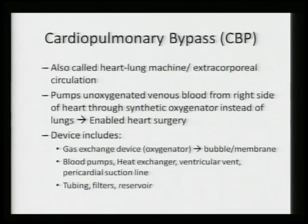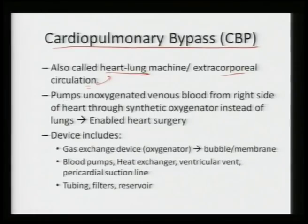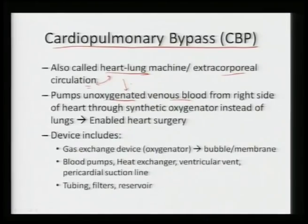A second application is cardiopulmonary bypass, also called the heart-lung machine or extra-corporeal circulation. This is required to exchange oxygen when the heart has been disabled. It helps in pumping unoxygenated venous blood — which lacks enough oxygen — through certain oxygenators instead of the lungs. The oxygenator can be either bubble type or membrane type, and this development has enabled heart surgery.